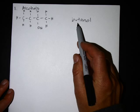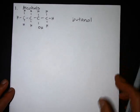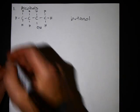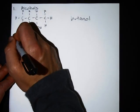We add the suffix — the suffix for an alcohol is -ol — so butane now becomes butanol. 'But-' means four carbons, '-ol' means alcohol. That's as easy as it's going to get.